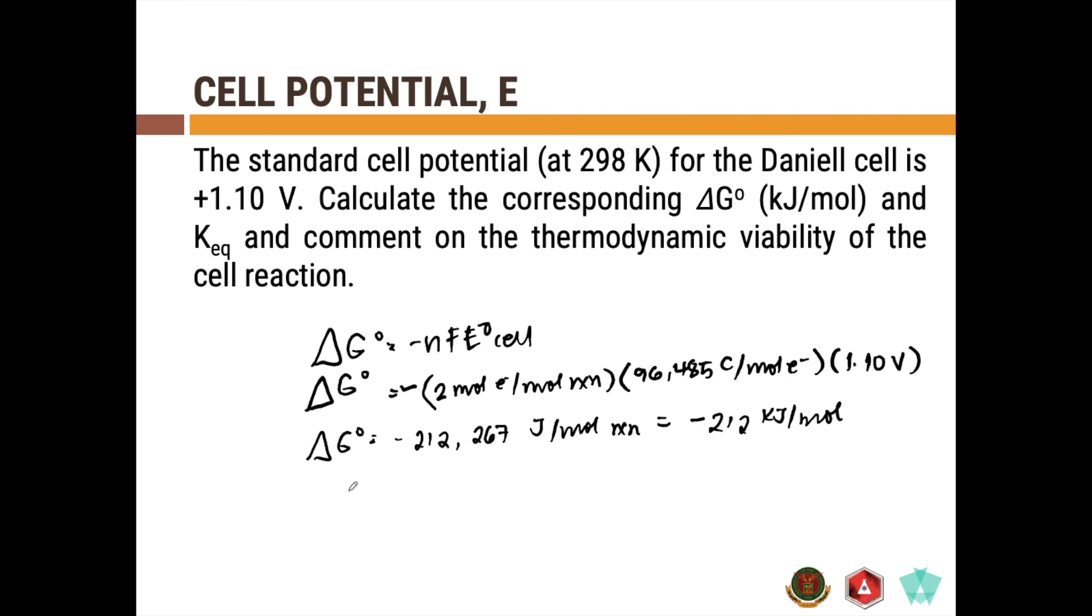How about KEQ? The KEQ can be calculated using the formula E° cell = RT over nF ln KEQ. You have 1.1 volts = 8.314 joules per mole Kelvin times 298 Kelvin all over 2 times 96,485 Coulomb per mole. This will give us a KEQ value equal to 1.62 times 10 to the 37.